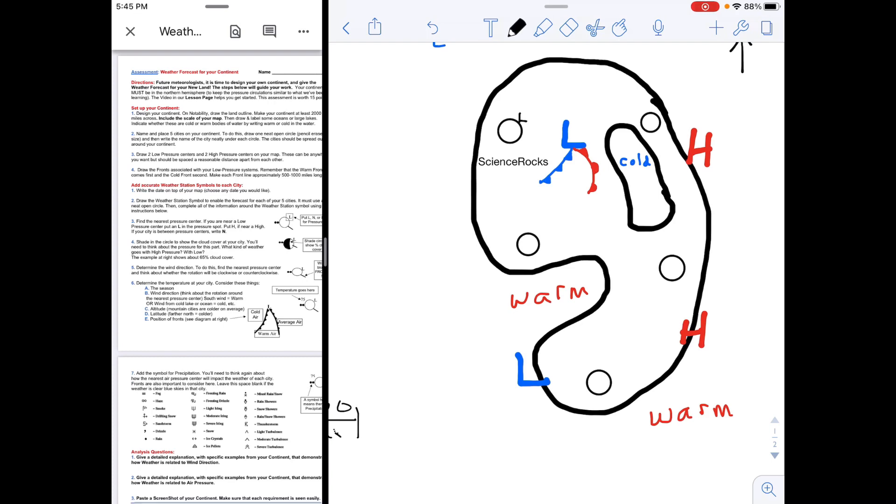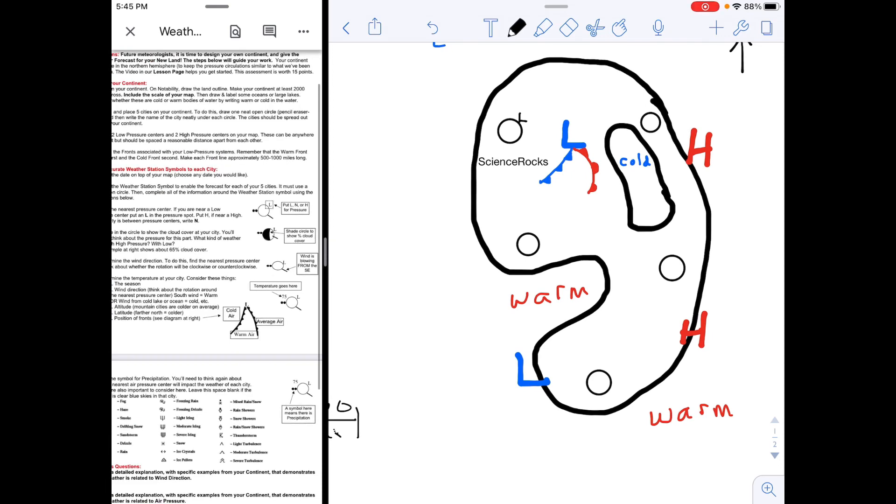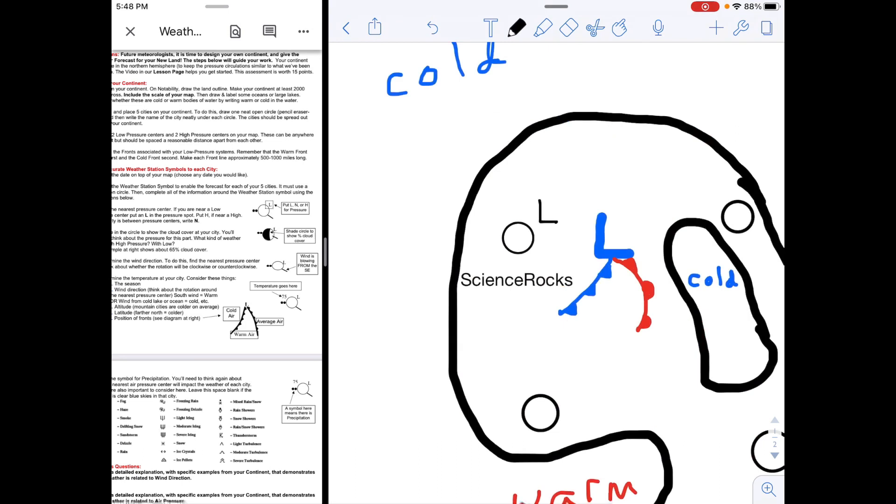Then step four, you shade in the circle to show cloud cover. What you have to think about here is about air pressure. So lower pressure is often associated with overcast skies and storms; higher pressure is associated with clearer skies. I'm going to put in cloud cover to go along with that low pressure system and I'm going to say that it's at least 75 percent cloud cover, and you indicate that by how covered the circle is on the interior.